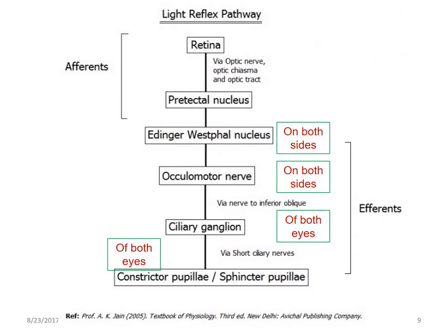To summarize, the afferent pathways are carried from the retina via the optic nerve, the optic chiasm, and the optic tract into the pre-tectal nucleus. From there onwards, it is conveyed to the Edinger-Westphal nucleus of both sides. Then the efferent nerves pass the impulses via the oculomotor nerve to the ciliary ganglia, and the short ciliary nerves carry the impulses to the constrictor pupillae or sphincter pupillae and bring about constriction of both the pupils.